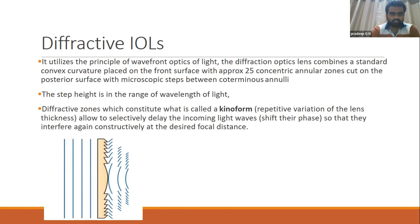Diffractive IOLs use the principle of diffraction and interference, applying wavefront optics of light. The lens combines standard convex curvature on the front surface with approximately 25 concentric annular zones cut on the posterior surface, with microscopic steps in between. The step height is in the range of the wavelength of light. These diffractive zones form what is known as a kinoform, which selectively delays incoming light waves so they interfere constructively at the desired focal distance.